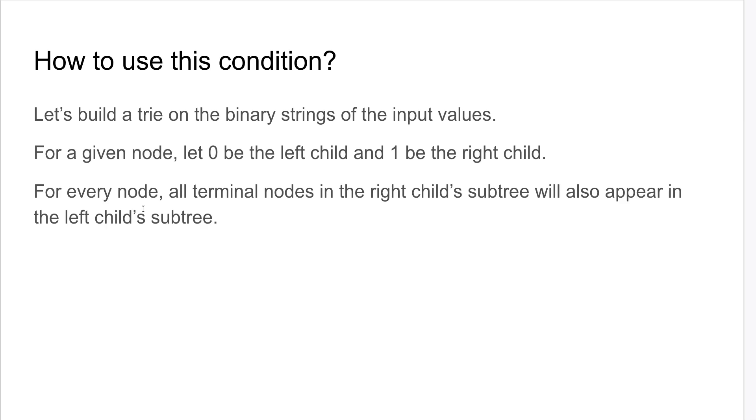How to use this condition? Let's build a trie on the binary strings of the input values. For a given node, let 0 be the left child and 1 be the right child. For every node, all terminal nodes in the right child's subtree will also appear in the left child's subtree. This is because all the submasks of the right child will appear in the left child as well, which means turning off the highest bit. This is true for every node in the trie.